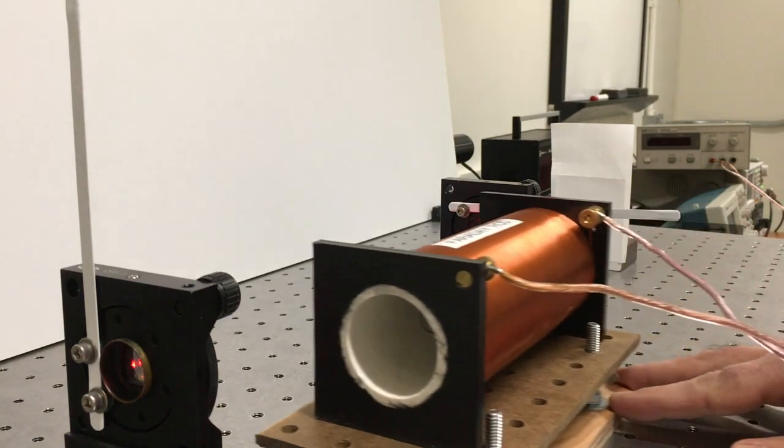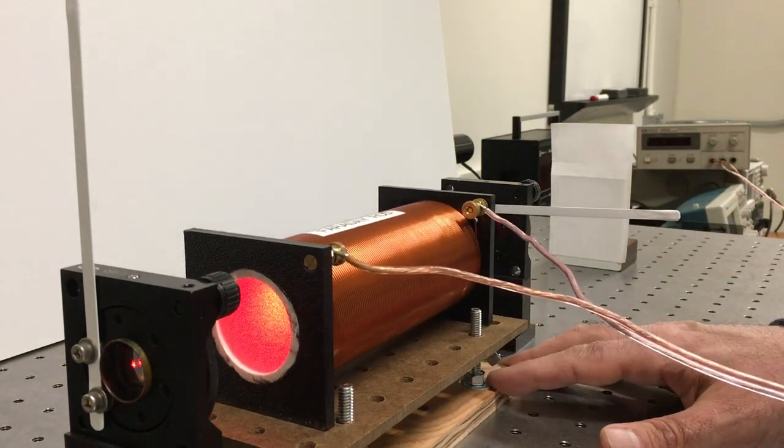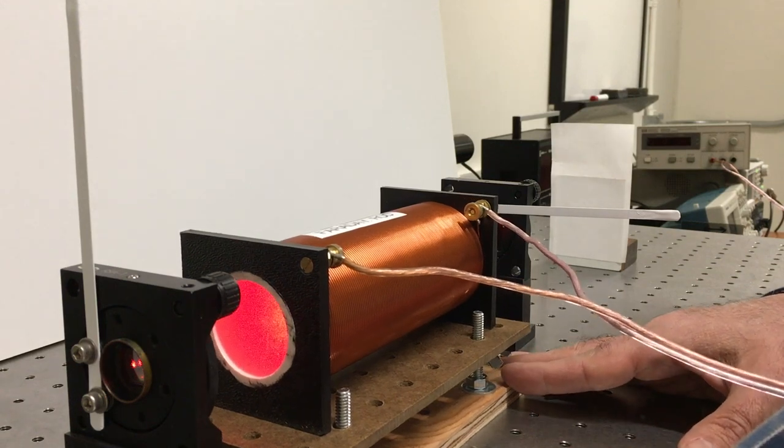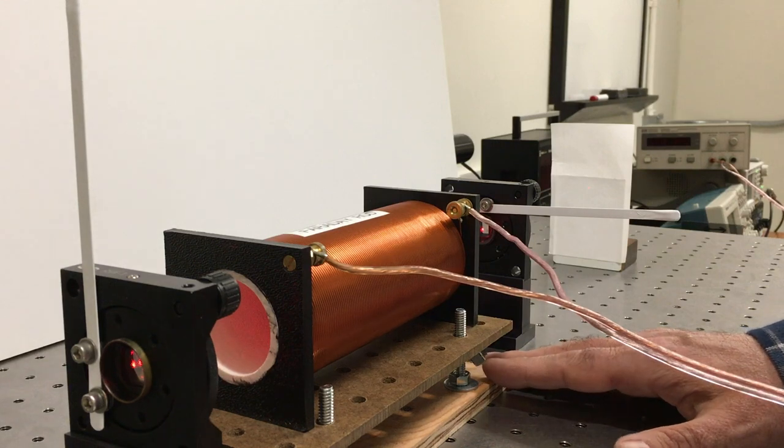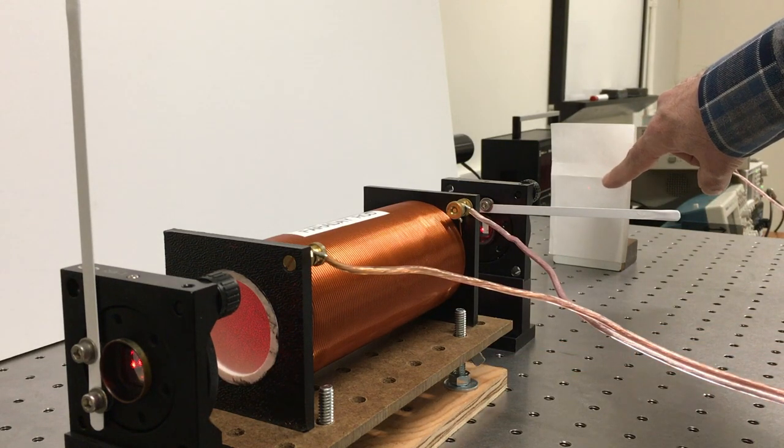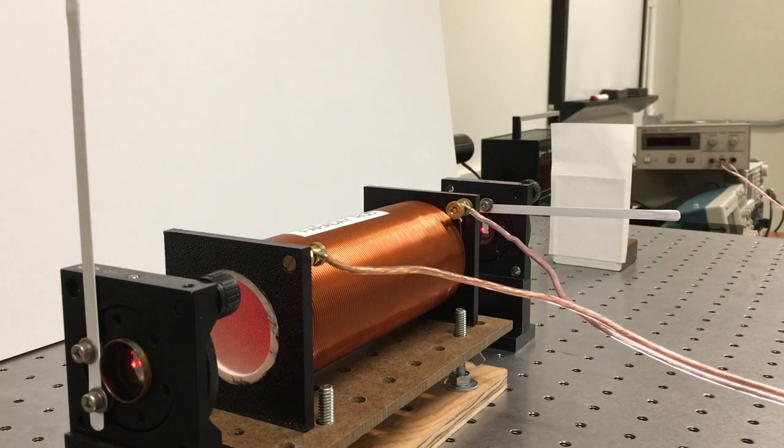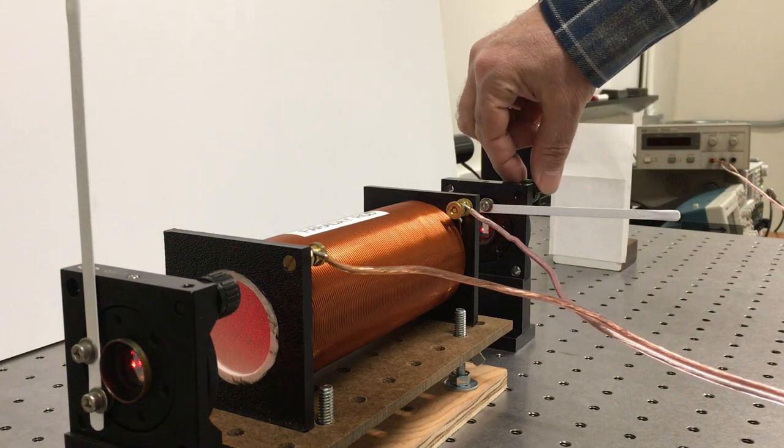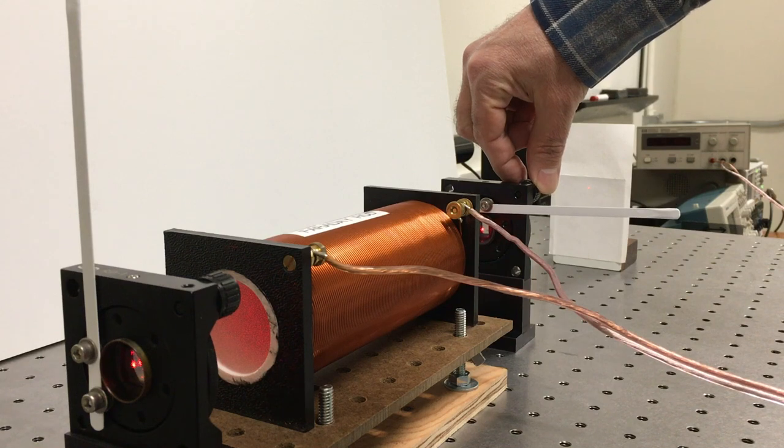Then I'm going to insert the Faraday rod in here so I can see light going through it. And you can see very faintly the spot has come back just a little bit, indicating the rod itself, even if not the magnetic field, is slightly birefringent because I can't actually zero out that little bit of light there.